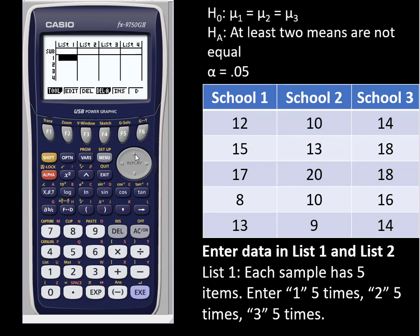We're going to associate the group number or sample number. That means we're going to enter 1 five times, then we'll enter 2 five times, and then we'll enter 3 five times. In the second list we go down the column entering the data from each school that corresponds with the sample number.